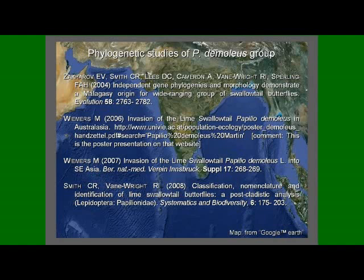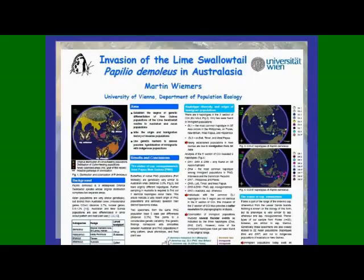We think Papilio demoleus has expanded its range by taking passage on transported citrus plants as replant. In the Philippines, the number of Papilio demoleus individuals have increased in correspondence to the expansion of citrus farms. Moreover, on the Nusatenggara Island in Indonesia, original populations are thought to be mixed with populations from elsewhere.